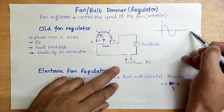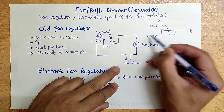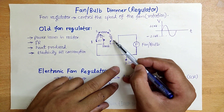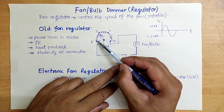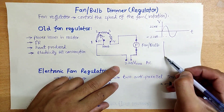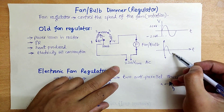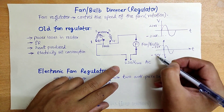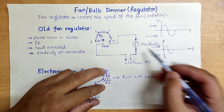The input waveform has 220 volts and minus 220 volts. By increasing the resistance, there will be more voltage drop and our load will see lower voltages. For example, if the knob is set to increase resistance, our load will get low voltages — let's suppose plus 50 volts and minus 50 volts — so our fan will experience low voltages and its speed will decrease.